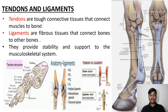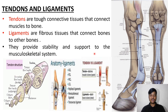Tendons are tough connective tissues that connect muscle to bone, as you can observe here. Ligaments are bone-to-bone connective tissues. They provide stability and support to the musculoskeletal system. You can observe the structure and anatomy of ligaments.